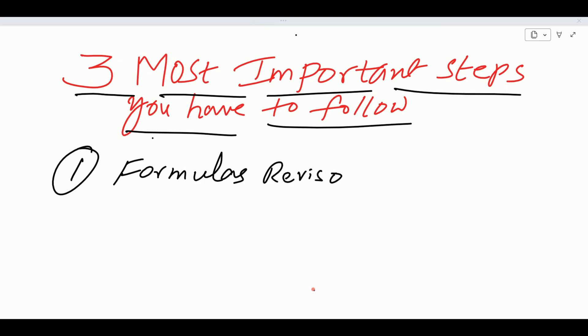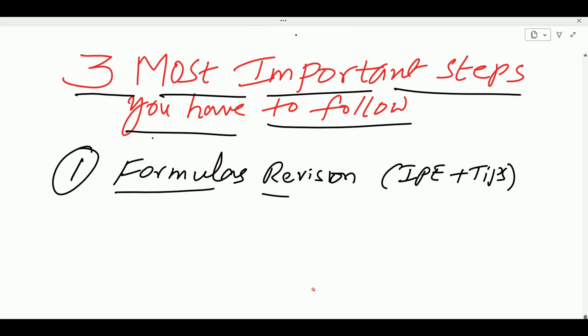Basically, IP formulas are part of tips and tricks. Plus some tips under certain standards. Tricks and questions are used with IP formulas plus tips. Some tips could serve as formulas for you — you can use tips as direct questions. So this is the first step: formula revision.